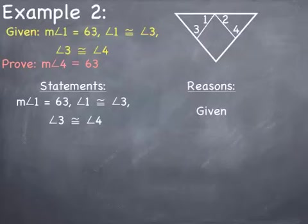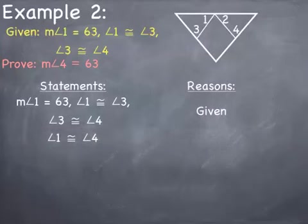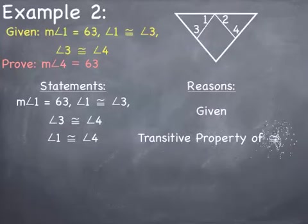Based on what we are given, we could do two different things. Notice angle 1 congruent to angle 3 and angle 3 congruent to angle 4 — we could do something there. We could also use the fact that the measure of angle 1 is 63. Since I'm trying to get angle 4 equal to 63 degrees, I'll start by getting angle 1 and angle 4 congruent to each other. With angle 1 congruent to angle 3 and angle 3 congruent to angle 4, I can say angle 1 is congruent to angle 4 by the transitive property of congruence.